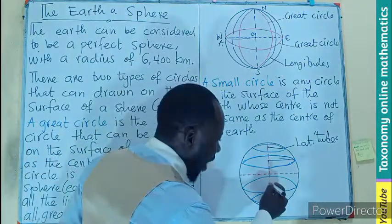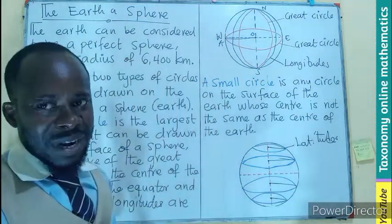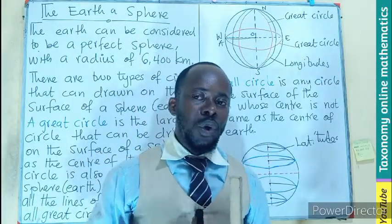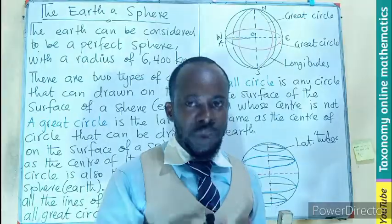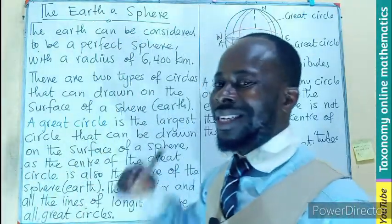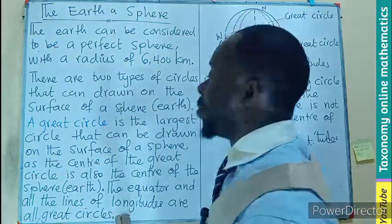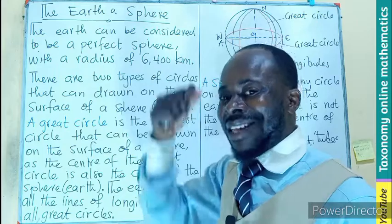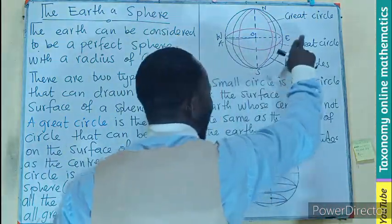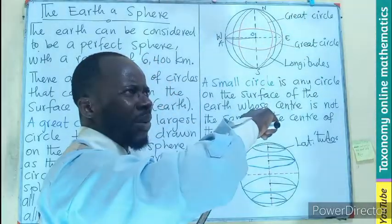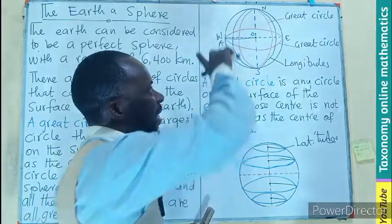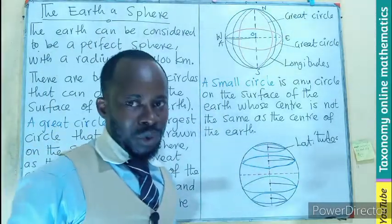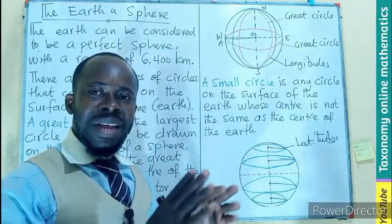Each small circle will have its center different from that of the sphere. So in summary, there are two types of circles defined by latitude and longitude. All longitudes describe a great circle, including the equator, which is the standard zero-degree latitude. The vertical lines are the longitudes and the horizontal lines are the latitudes.